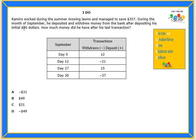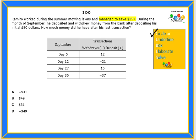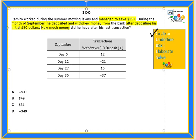On the right side of the screen, you will see the cube strategies we will be using today. We will start with circle or underline keywords — but if you prefer, you can also highlight. Keywords include: managed to save $357, month of September, he deposited and withdrew money from the bank after depositing his initial $80, and how much money did he have after his last transaction?